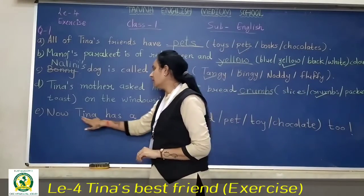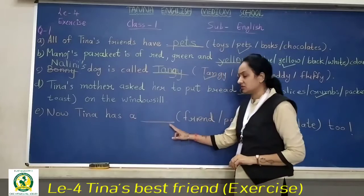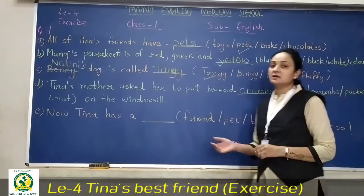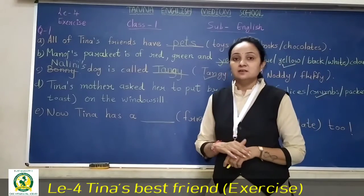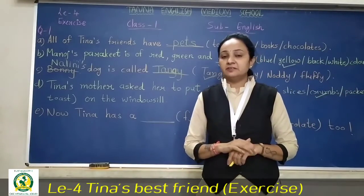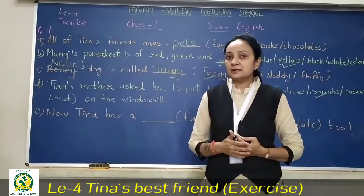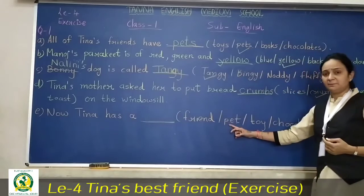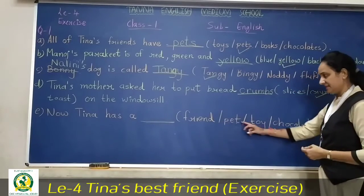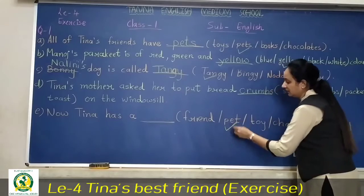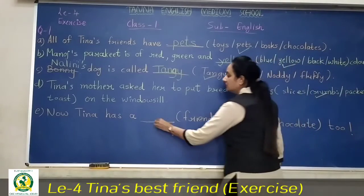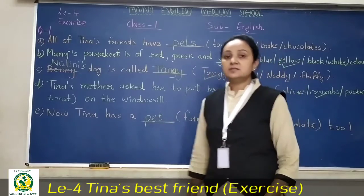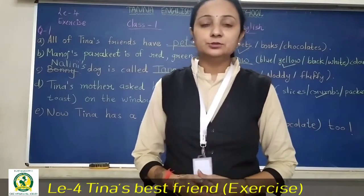Now the last one. Tina has a dash — friend, pet, toy, or chocolate? Tina ke paas ek crow ya pigeon hai, when she has a crow, she is happy with her. So the answer is pet. Take a mark here and write pet. This will be pet. So this you have to complete in your textbook. Thank you.